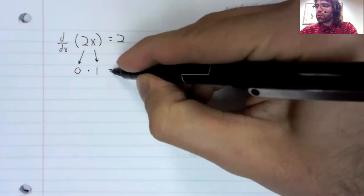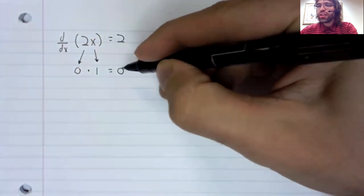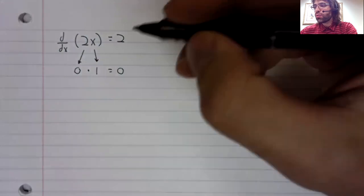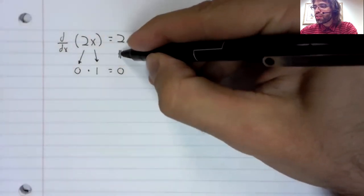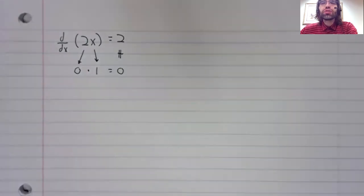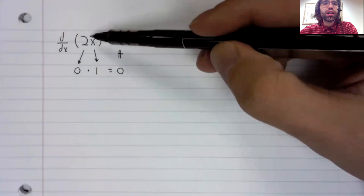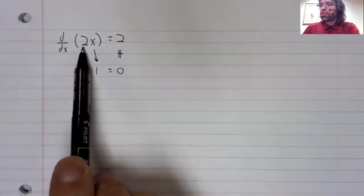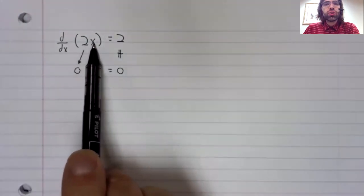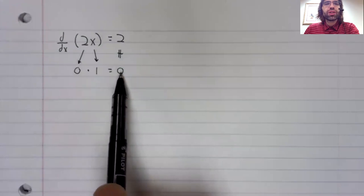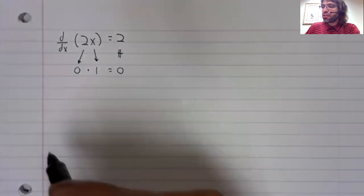And 0 times 1 equals 0, which is not 2. So we cannot take the derivative of this product by differentiating these terms and multiplying them together.